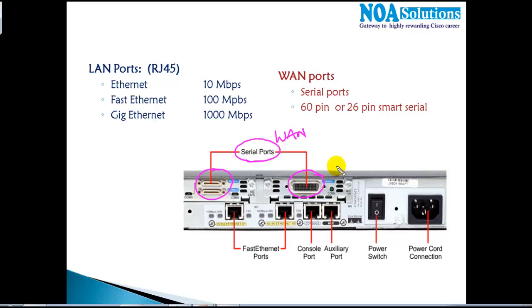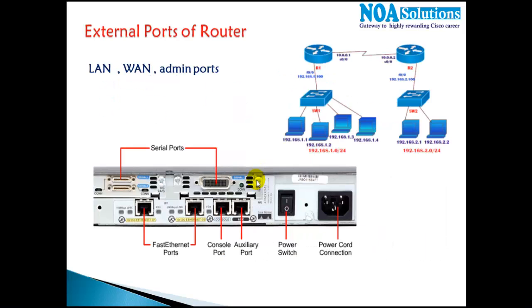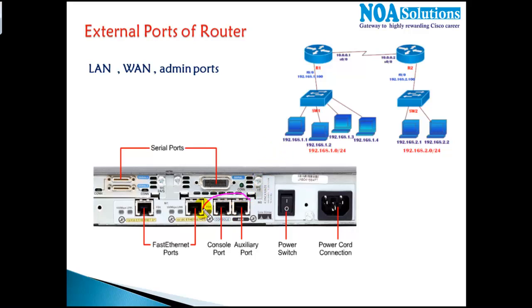The number of WAN ports depends upon the different models of the router. The third category of ports is administrative ports — console and auxiliary — and these two fall under the category of administrative ports.